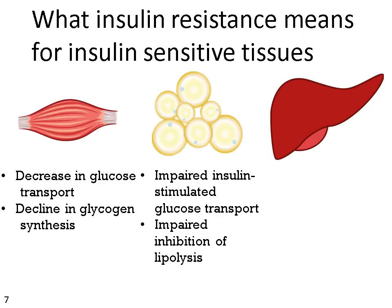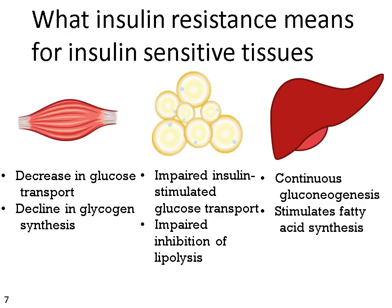In the liver, which does a great deal for the body's glucose homeostasis, insulin resistance presents as continuous gluconeogenesis and stimulated fatty acid synthesis.